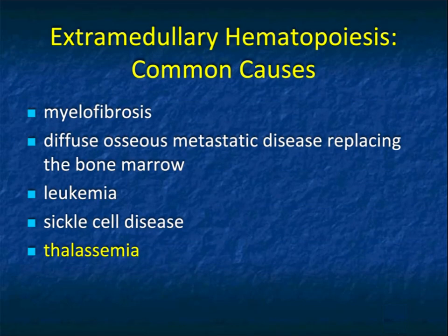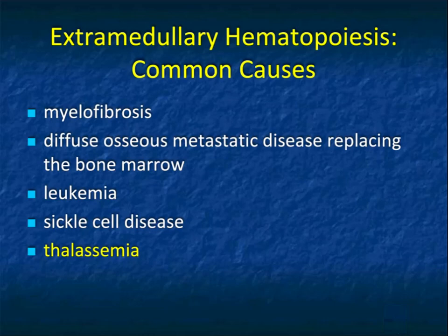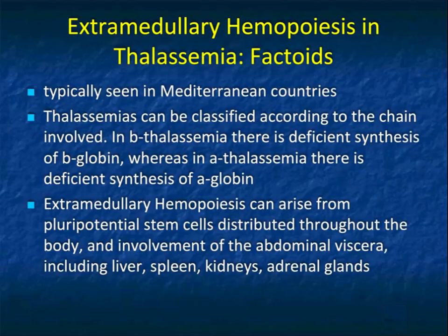Besides thalassemia, other causes of extramedullary hematopoiesis include sickle cell disease, leukemia, diffuse osseous metastatic disease replacing the bone marrow, and myelofibrosis. We do see more cases of myelofibrosis, so it's something to think about in that setting as well.